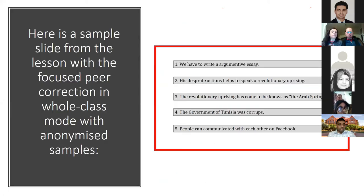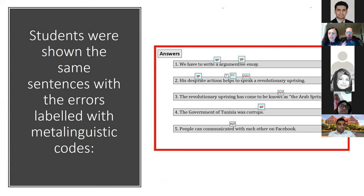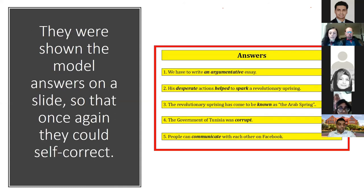Here is a sample from the lesson with focused peer correction in whole-class mode with anonymized samples. Since the whole-class work was done orally — which is often a more lively and effective way to maintain student focus and engagement — there was no capture of student response data. Students had a go at correcting the sentences and explaining the relevant rule. They were then shown the same sentences with errors labeled with metalinguistic codes. Finally, based on oral discussion and the slides with errors marked up, students were asked to write down their version of the corrected sentences and were then shown model answers so they could self-correct.